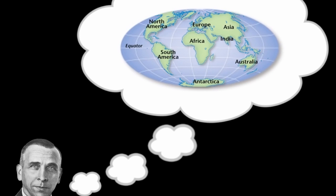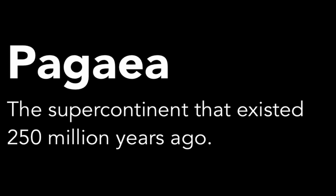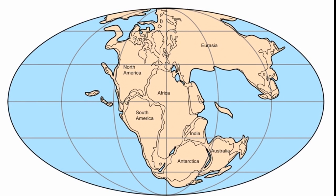He even came up with a name for that supercontinent that existed in the past. He called it Pangaea — the supercontinent that he believed existed about 250 million years ago. Pangaea, or Pangaea, is actually an appropriate name. It's a Greek term that means 'entire earth' or 'all earth.' So if you think about it, when all the continents were together, it would make sense to call that land mass Pangaea. Here's what he thought it looked like. You can see within this diagram the modern-day continents of North America, Africa, South America, Antarctica, India, etc., but they're in totally different positions, all connected into this one supercontinent.